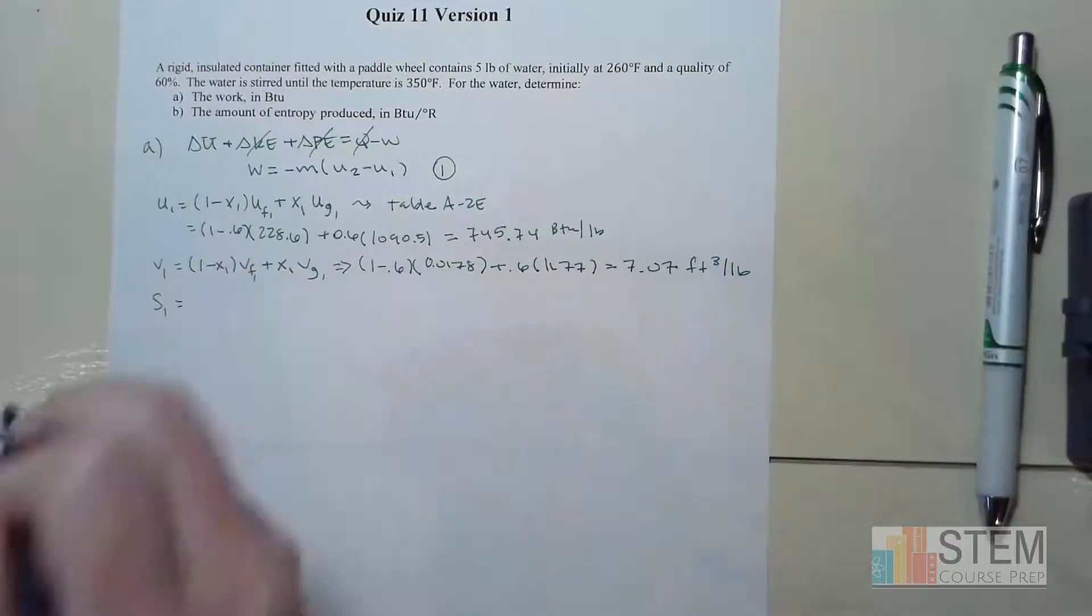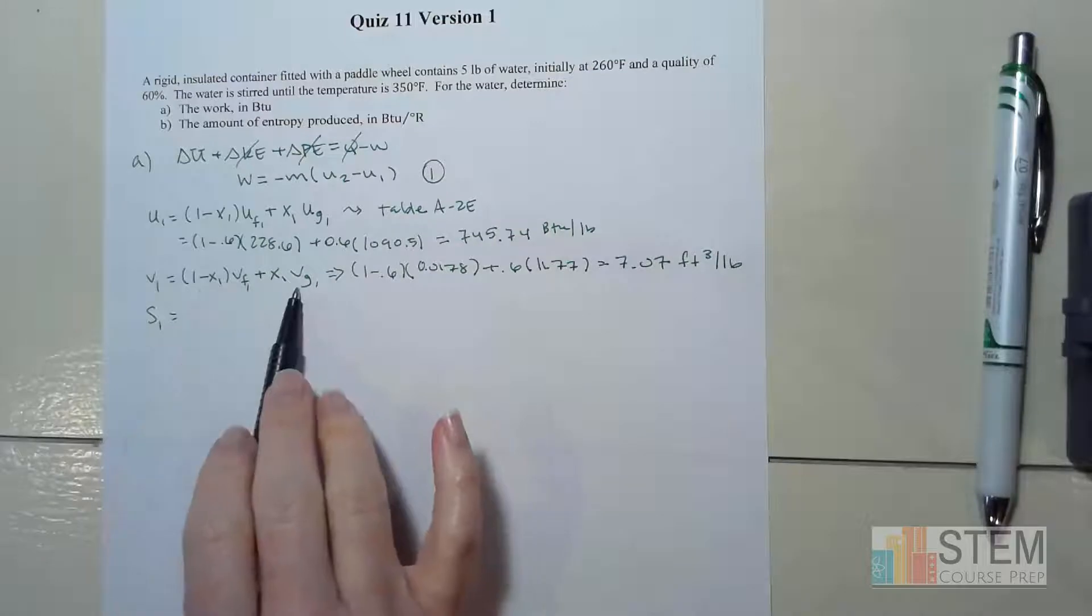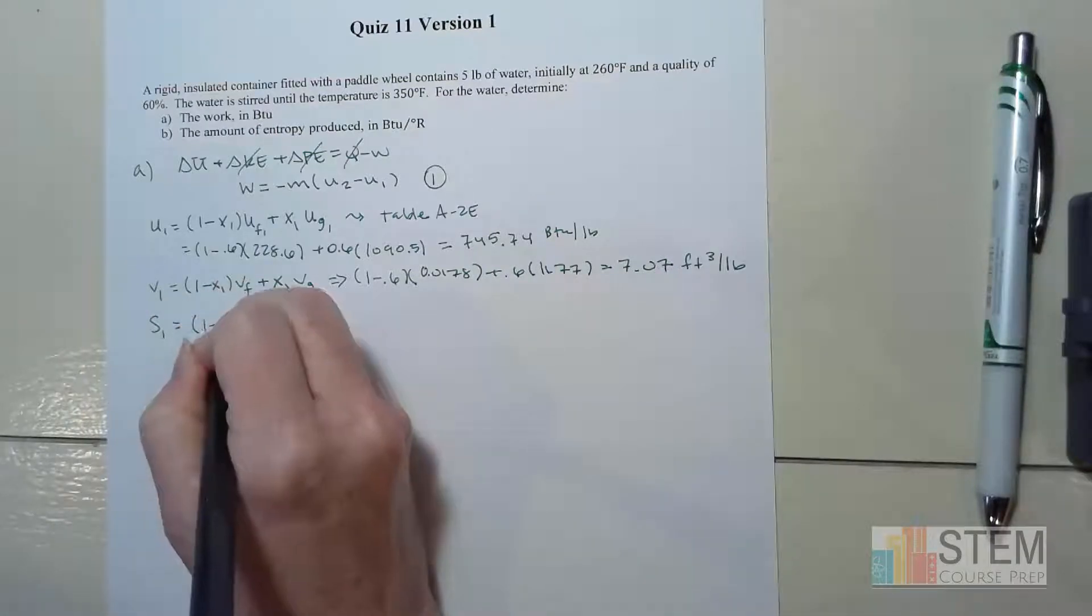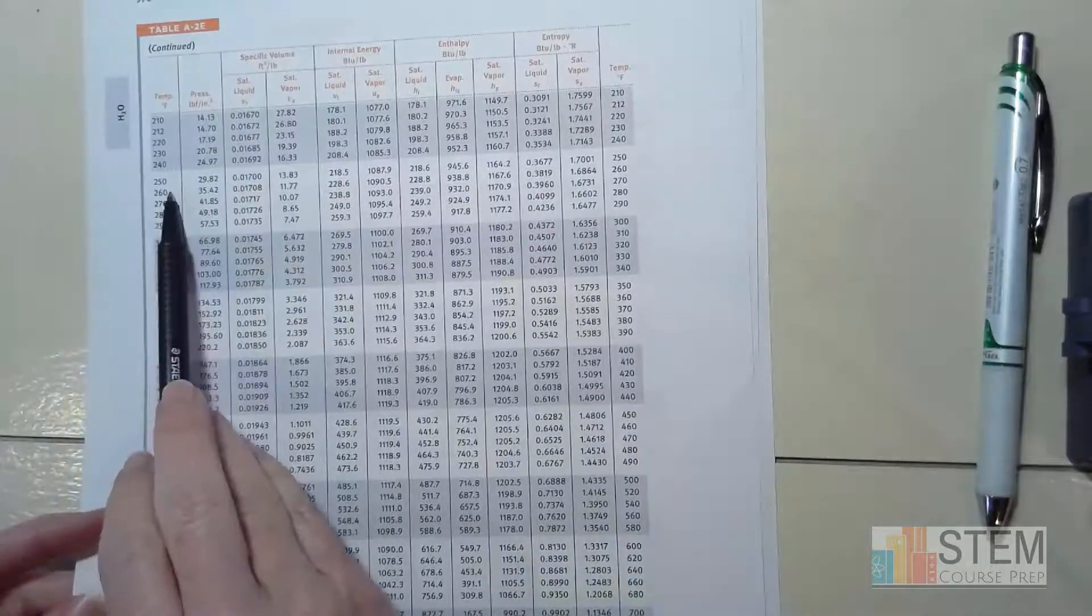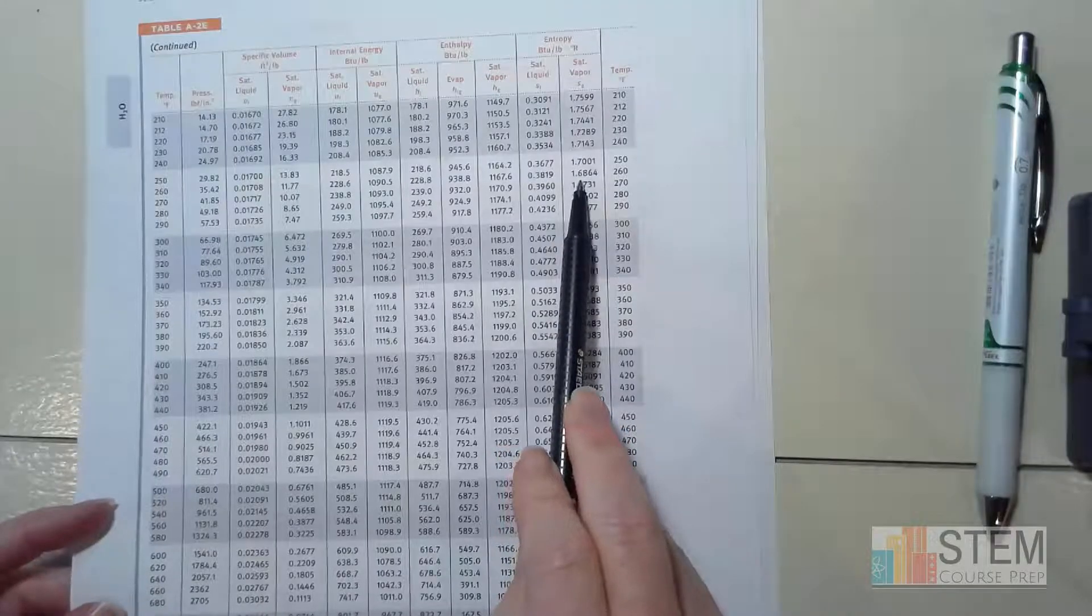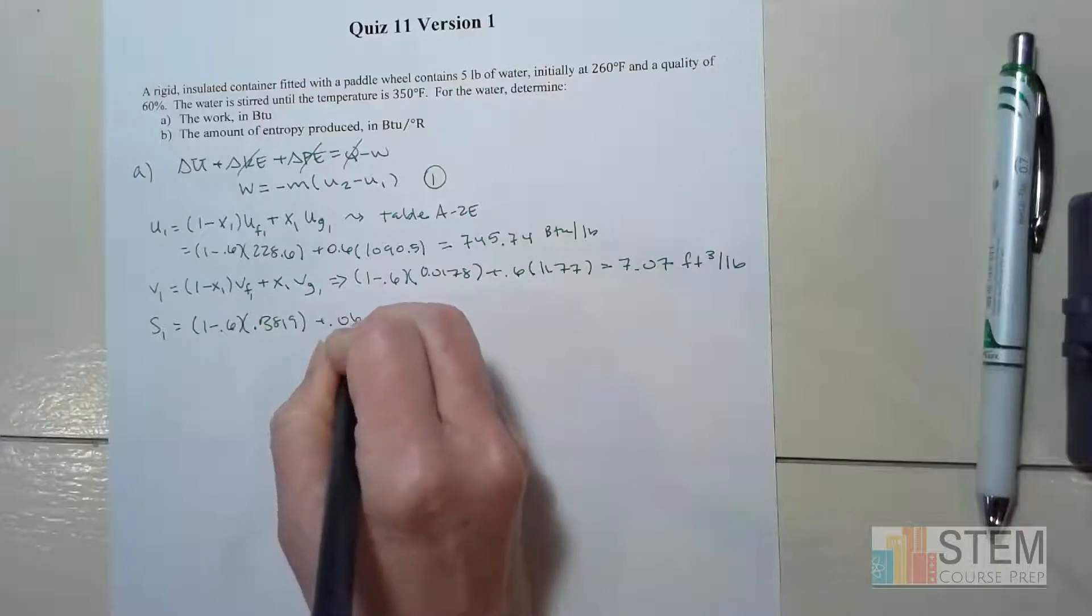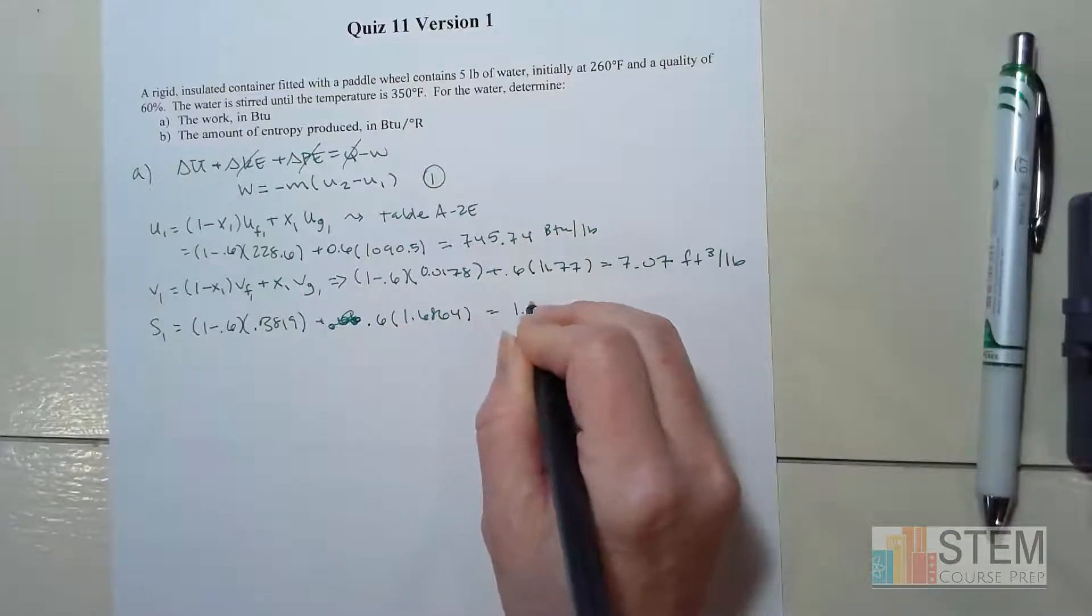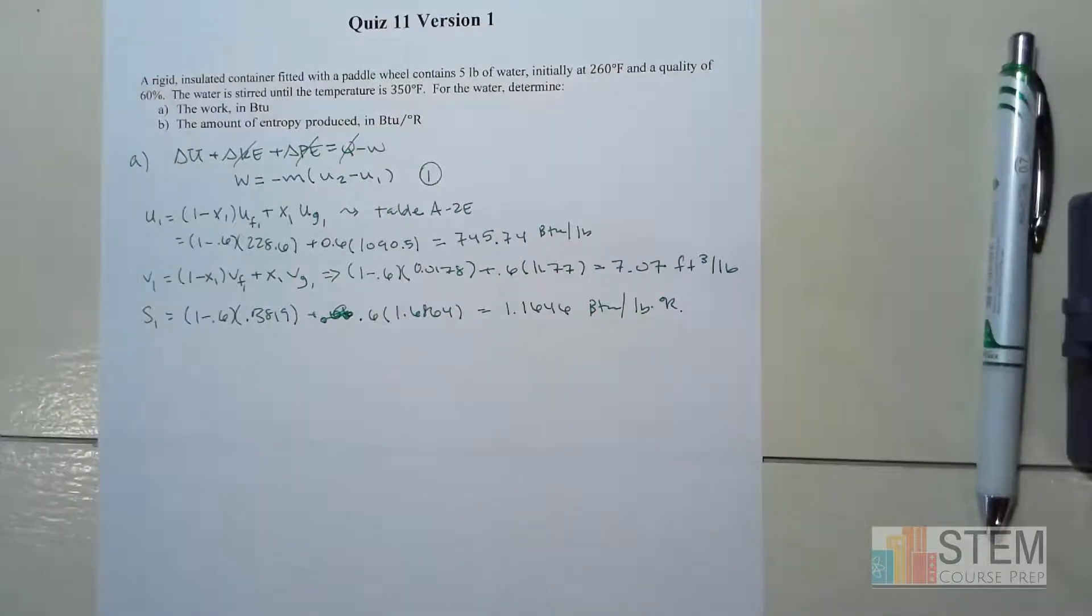The last thing I want to find is entropy at state 1 because I'll need that for part B. Same equation as before, but now with S for entropy. We have (1 - 0.6) times 0.3819 plus 0.6 times 1.6864, which gives us S1 = 1.1646 BTU per pound degree Rankine.